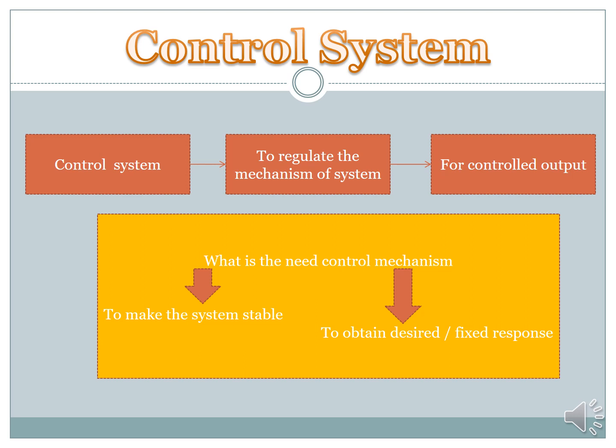So why do we need a control system? What is the need of a control system? There are two purposes of a control system. The first is to make the system stable — that is the most important point. The second is to obtain the desired or a fixed result. These are the two purposes for which we design the control system.